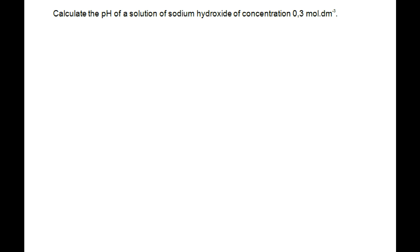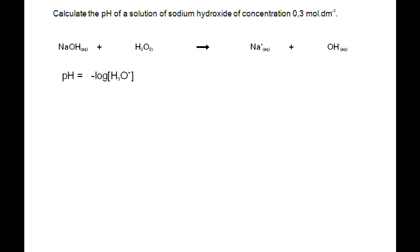We will now calculate the pH of a sodium hydroxide solution of concentration 0.3 mol·dm⁻³. Sodium hydroxide dissociates as: NaOH + H2O → Na+ + OH-. The pH equation requires [H3O+], so we use the Kw equation to link [H3O+] and [OH-]: Kw = [H3O+][OH-] = 1×10⁻¹⁴.